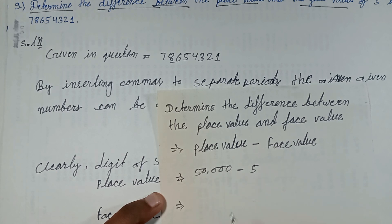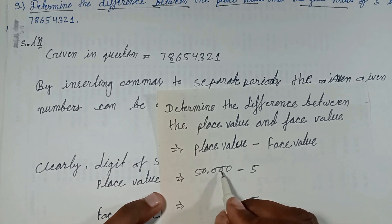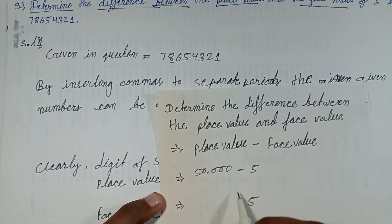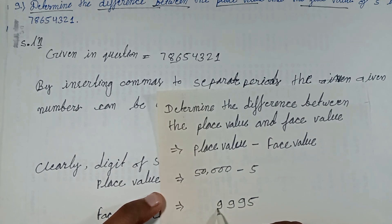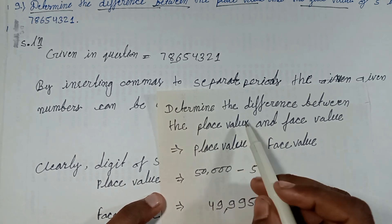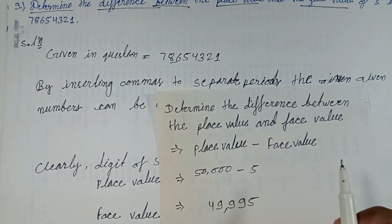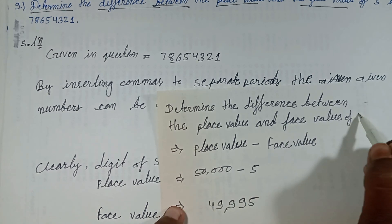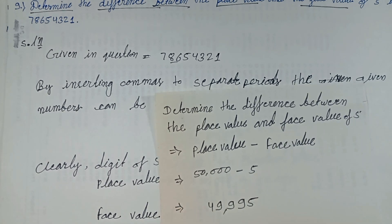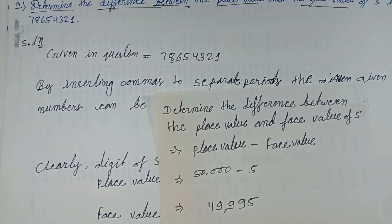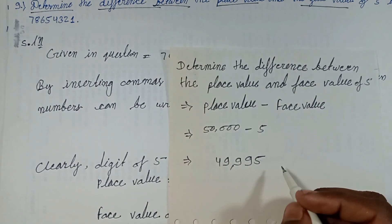Subtracting: 50,000 minus 5. We get 49,995. So the difference between the place value and face value of 5 in the number 78654321 is 49,995. This is the answer.